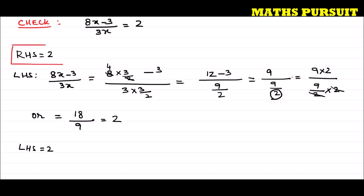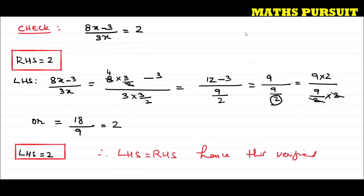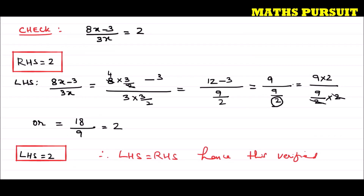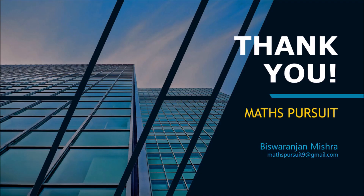The right hand side is 2 and the left hand side is also 2, therefore left hand side equals right hand side — hence this is verified. Hope you understood this; it is very simple and straightforward. If you have any questions, please reach out in the comment section. If you like my videos, please subscribe and let your friends know. Thank you, bye.